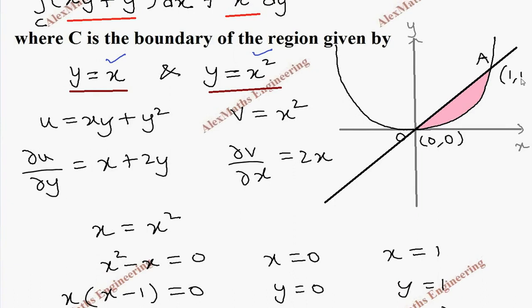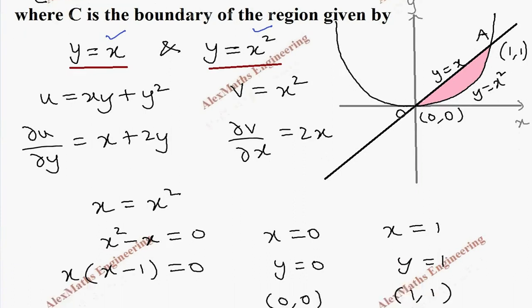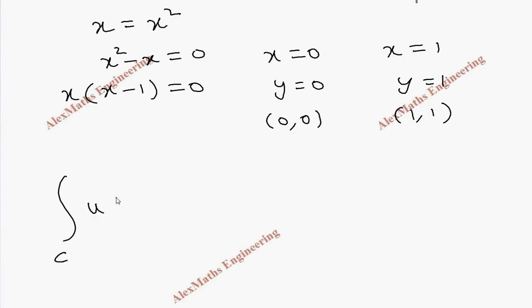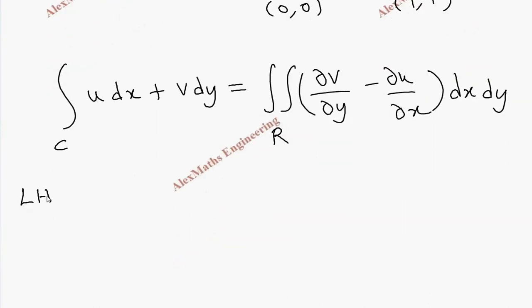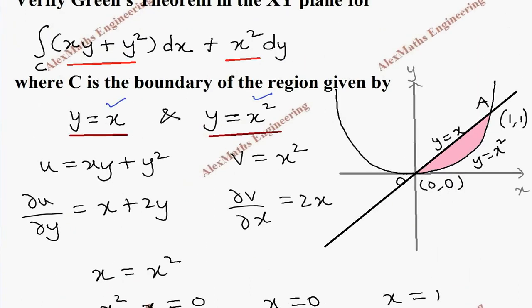Point (0,0) is already marked, and point A is (1,1). The boundary y equals x goes from O to A, and y equals x squared is the other boundary. Green's theorem states: integral over C of u dx plus v dy equals double integral over region R of (∂v/∂x minus ∂u/∂y) dx dy. For the LHS, we split into integral from O to A plus integral from A to O.